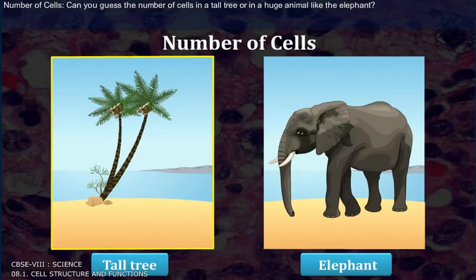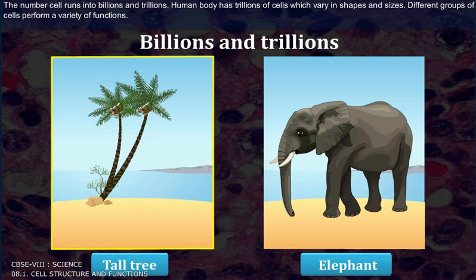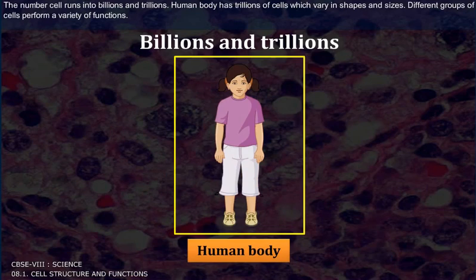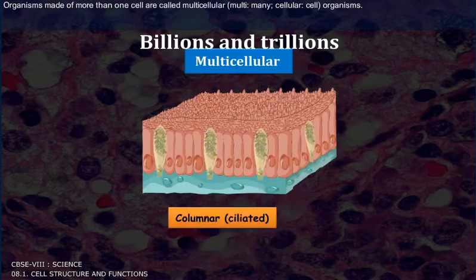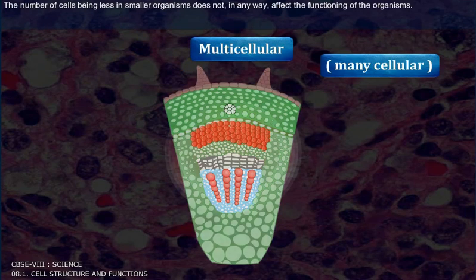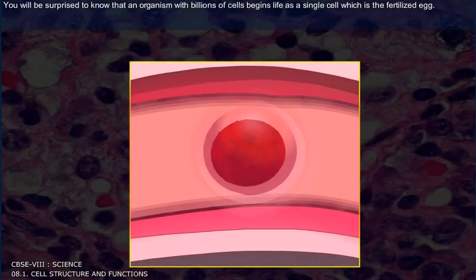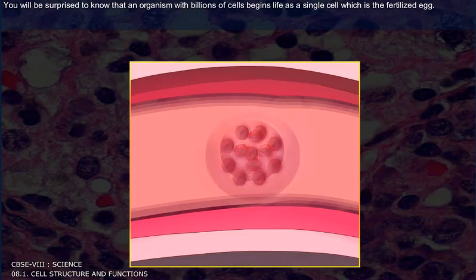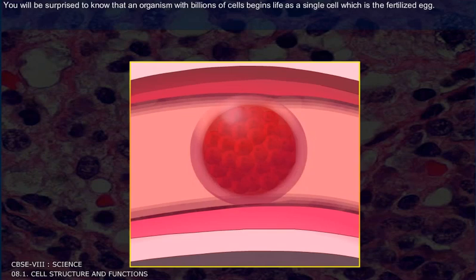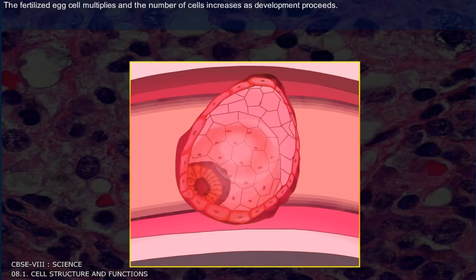Can you guess the number of cells in a tall tree or in a huge animal like the elephant? The number of cells runs into millions and trillions. The human body has trillions of cells which vary in shapes and sizes. Different groups of cells perform a variety of functions. Organisms made of more than one cell are called multicellular. An organism with billions of cells begins life as a single cell — the fertilized egg — which multiplies as development proceeds.